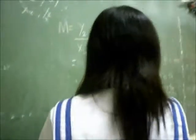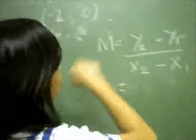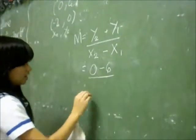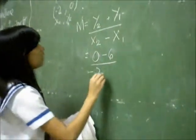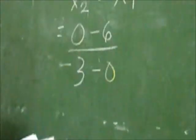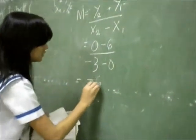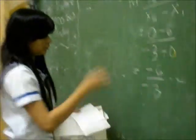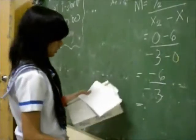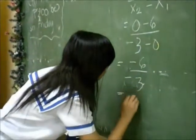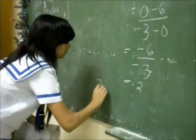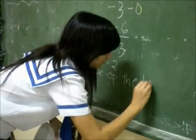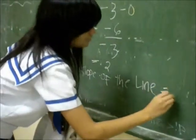To find the slope, substitute into the formula: m equals (0 minus 6) over (negative 2 minus 0), which gives negative 6 over negative 2. Dividing, we get 2. So the slope of the line is 2.